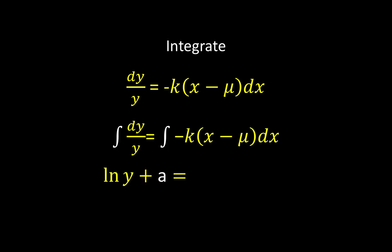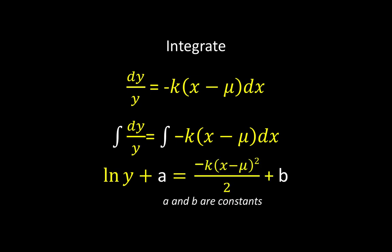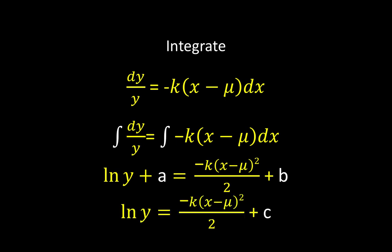To simplify this equation, we integrate both sides. Integrating, we arrive at the indefinite integral of dy over y, which is ln y plus some constant, and the antiderivative of the right side equals the constant times the antiderivative of the quantity x minus mu, computed by applying the power rule of integration. We arrive at an expression on the right plus some constant d. If we subtract constant a from both sides, since a and b are constants, the result is just another constant c. So our general form is ln y equals negative k times the quantity x minus mu squared over 2 plus some constant c.